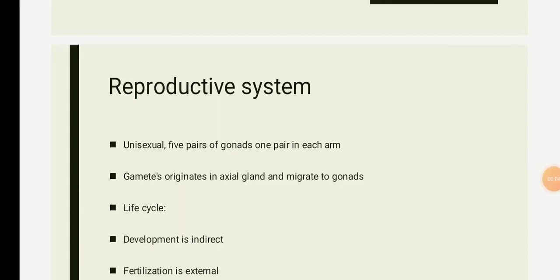Good morning students. In today's lecture we are going to study about the reproductive system and the life cycle of the starfish. In our last video or past few days we have already completed the study on Echinodermata — that is, on starfish — covering systematic position, morphological structures, pedicellaria, digestive system, digestive glands, respiration, water vascular system, excretion, nervous system, sense organs, and circulatory system. Now we are going to see the last part: the reproductive system and its life cycle.